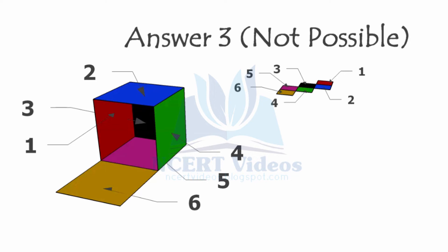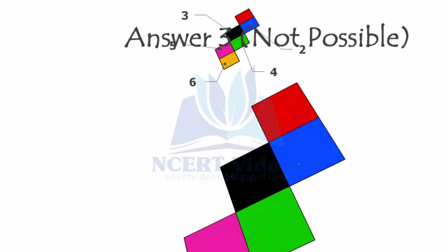If any one criterion fails, then the net cannot make a valid die. For justification, let's check other combinations: red and green - one plus four is five, not seven. Pink and blue - pink is five, blue is two, which does make seven, but the other pairs do not. Therefore the answer to question three is: not possible. To summarize: first check whether a cube can be constructed from the net, and second check whether opposite sides sum to seven.